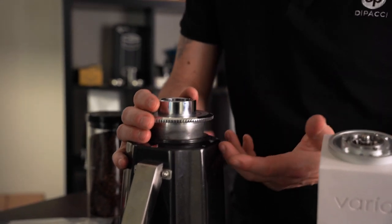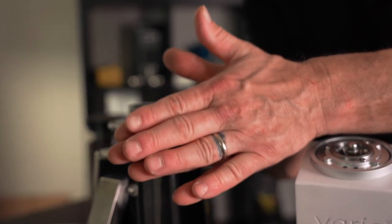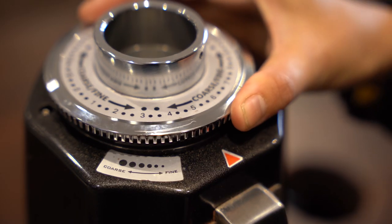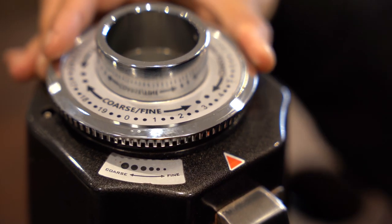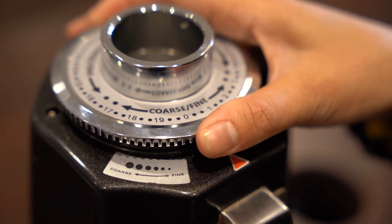So what happens over time is if you're making it fine, fine, fine, those blades will end up nearly touching. They'll get quite a big buildup of coffee grounds that are very fine that will solidify, for lack of a better word, and cause the grinder to block.